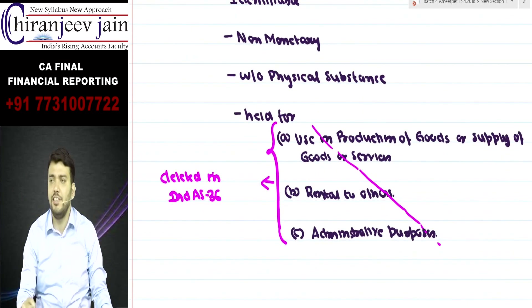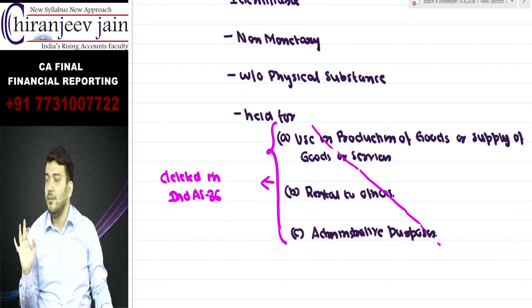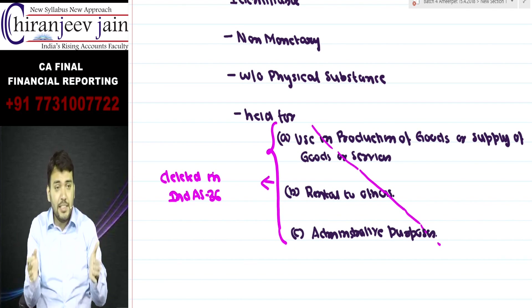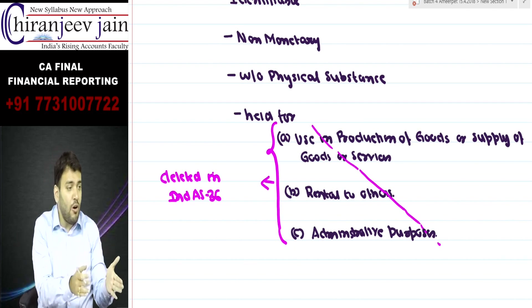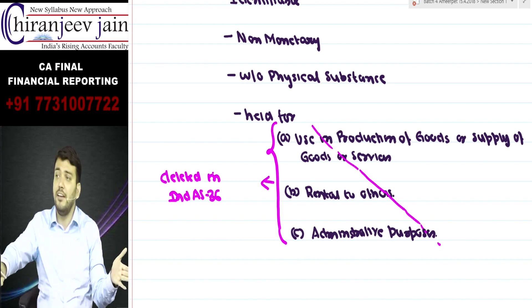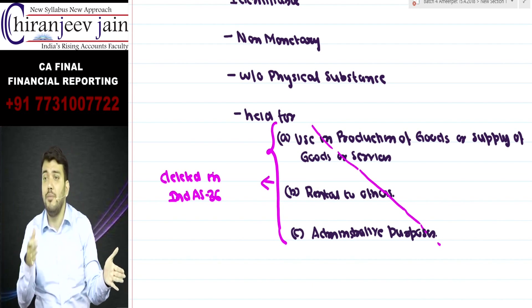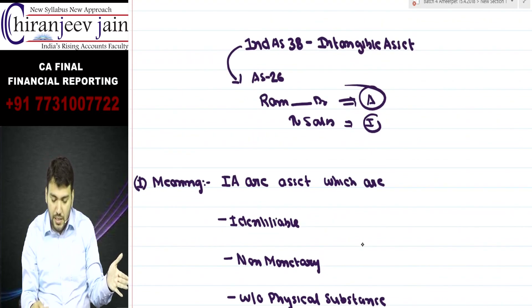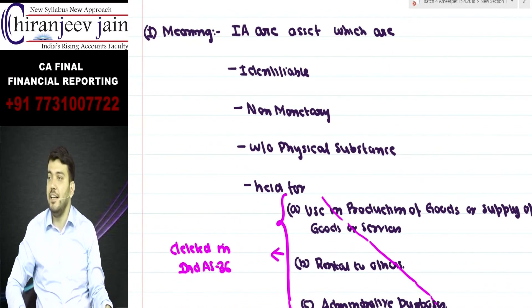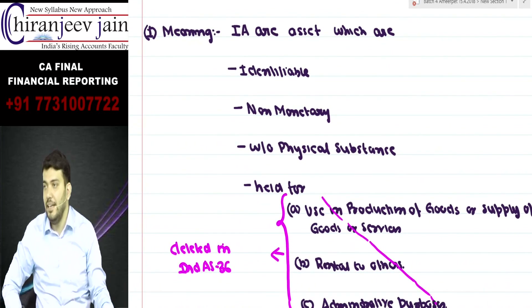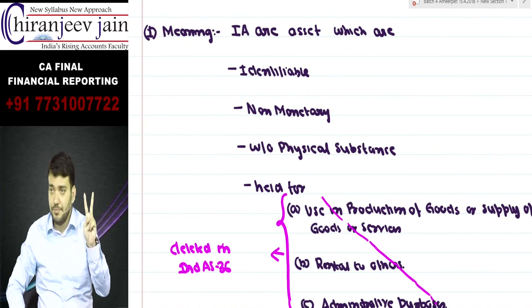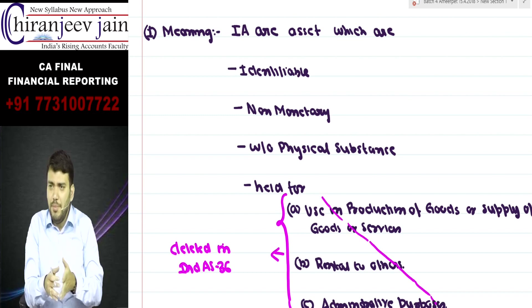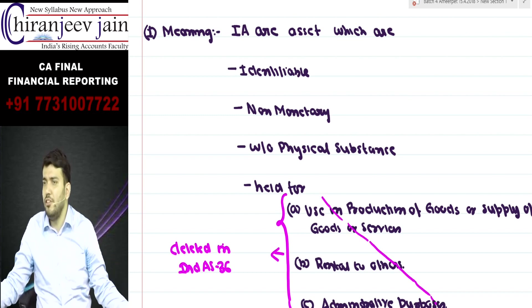Therefore, IND AS 36 has not written this explicitly. Any intangible assets held for sale in the ordinary course of business are automatically outside the scope of IND AS 36. Apart from that, all intangible assets will be covered under IND AS 38. So this makes one apparent difference, but it is actually not a difference.